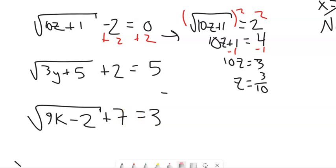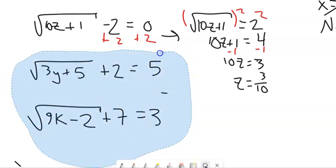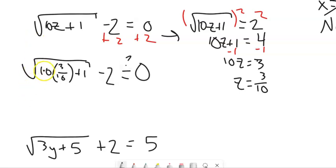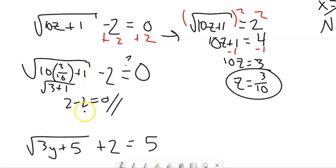Let's plug it back in to check it. Take 3 tenths and plug it into here. 10 times 3 tenths is 3. Square root of 3 plus 1 is the square root of 4. So 2 minus 2 equals 0. Checks out. That's my answer. Plug it in, see if it works.